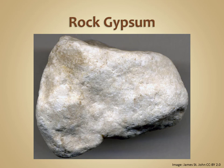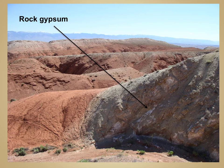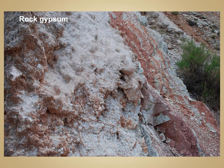Rock gypsum can also form from evaporating seawater, but is also very common in dry interior basins such as the Great Salt Lake or interior basins in Australia, where mineral-rich water collects in pools and then evaporates because of the dry environment, leaving behind layers of rock gypsum.